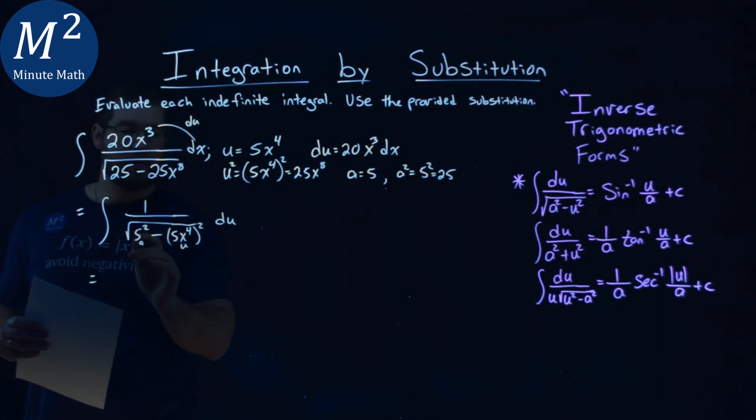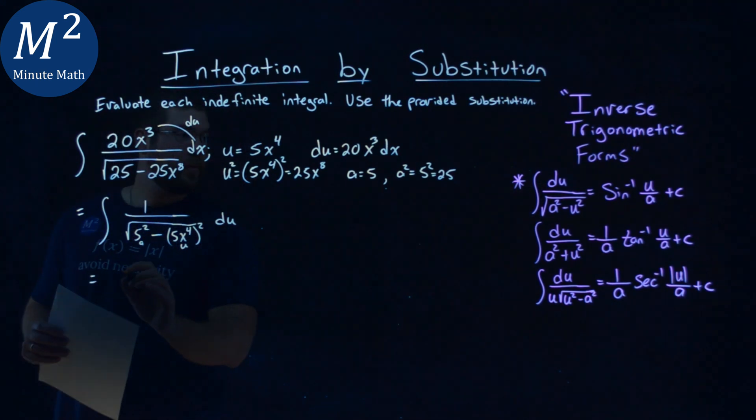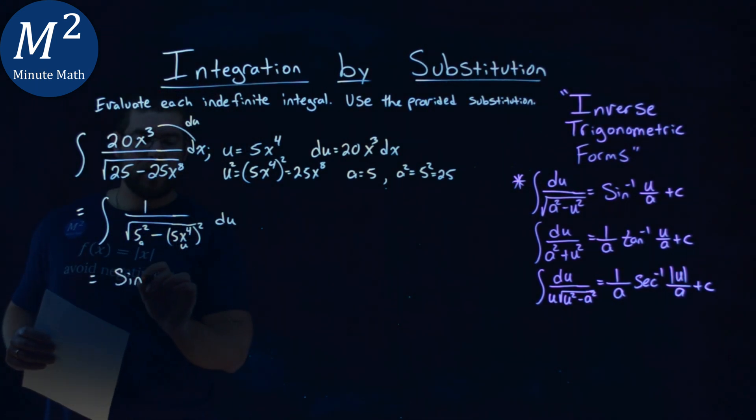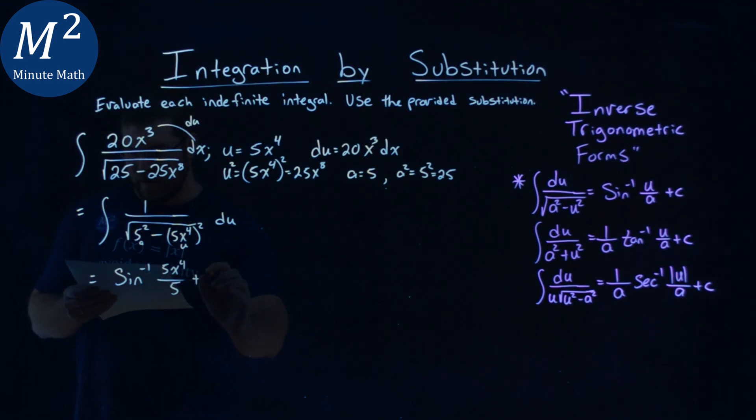So, to do that, we have the integral of, well, my a, we follow the formula, and that's equal to, we can take the integral, arc sine of my u value over a. So, my 5x⁴ over a, which is 5, plus c.